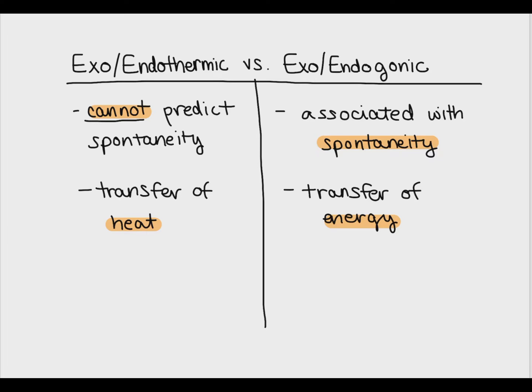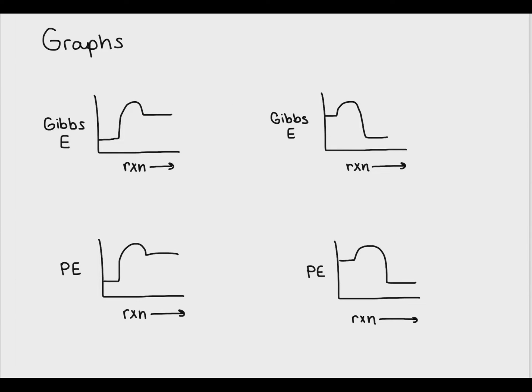The main differences are that exergonic or endergonic reactions are associated with spontaneity and are a transfer of energy, rather than endo- and exothermic being a transfer of heat. Remember, exo- or endothermic reactions are not associated with spontaneity. Now let's look at some graphs.